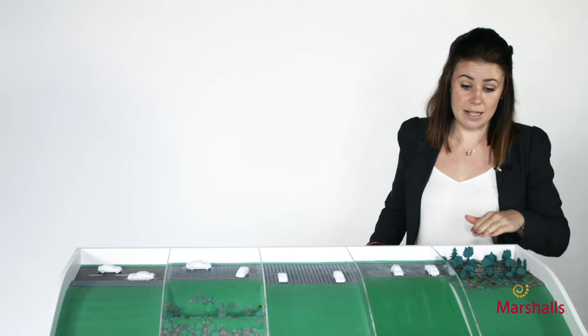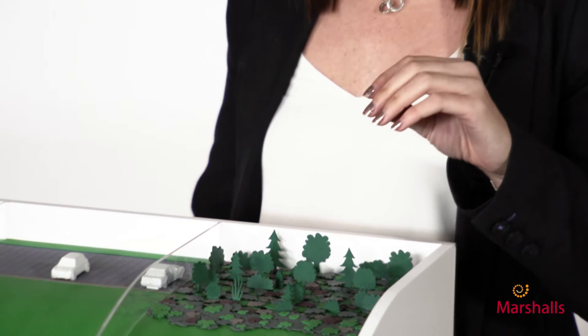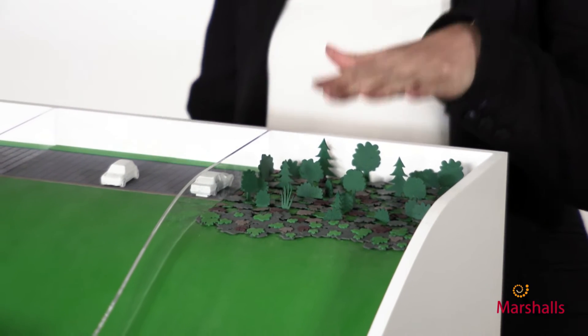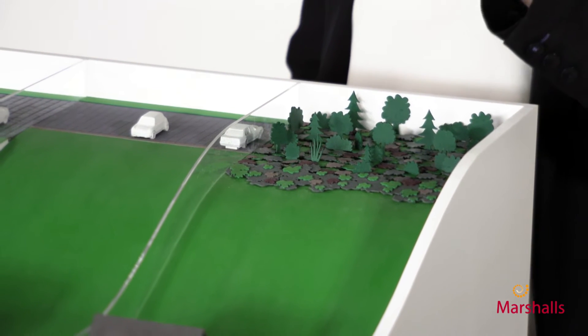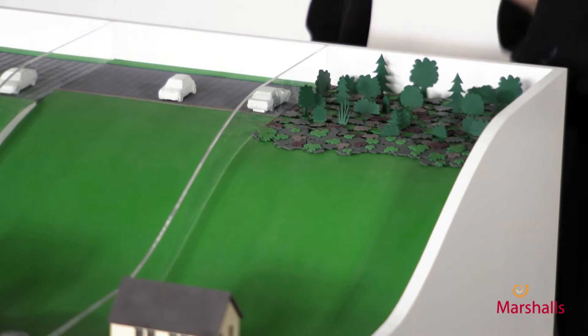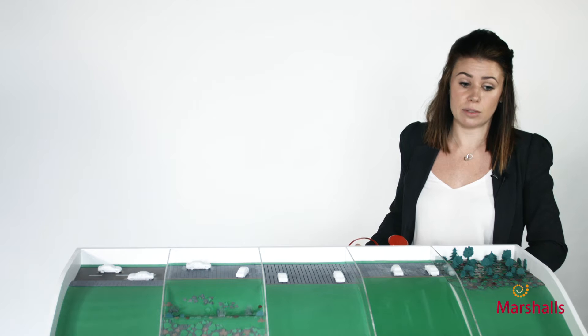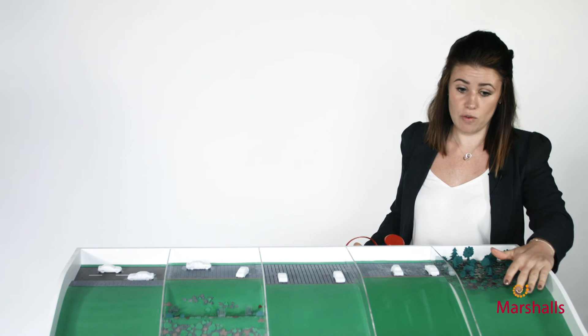So first of all, over here is a natural landscape, so there's been no hard standing development on there. It's just your natural trees and grassed areas. Now what happens is the rain will fall on this area and penetrate straight into the ground, and this helps stop flooding downstream.